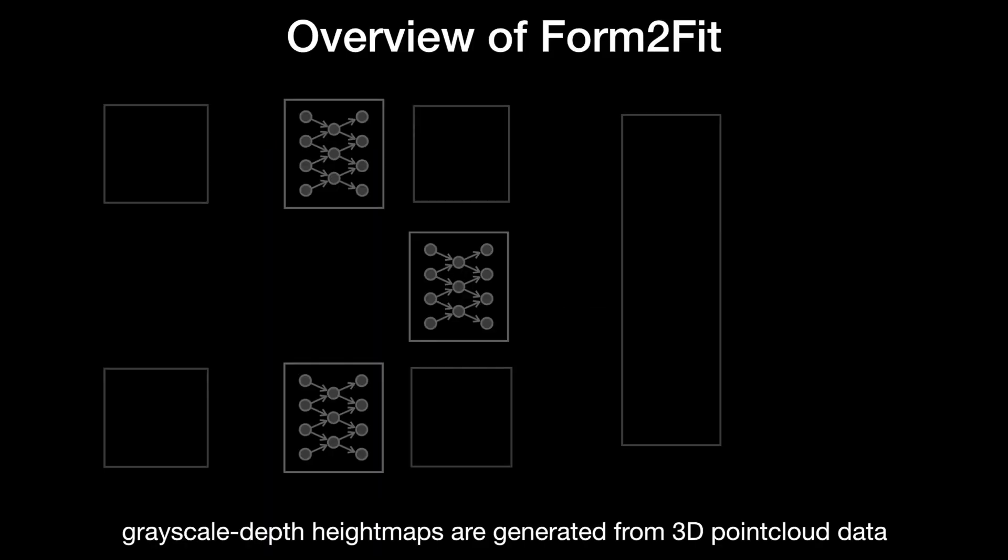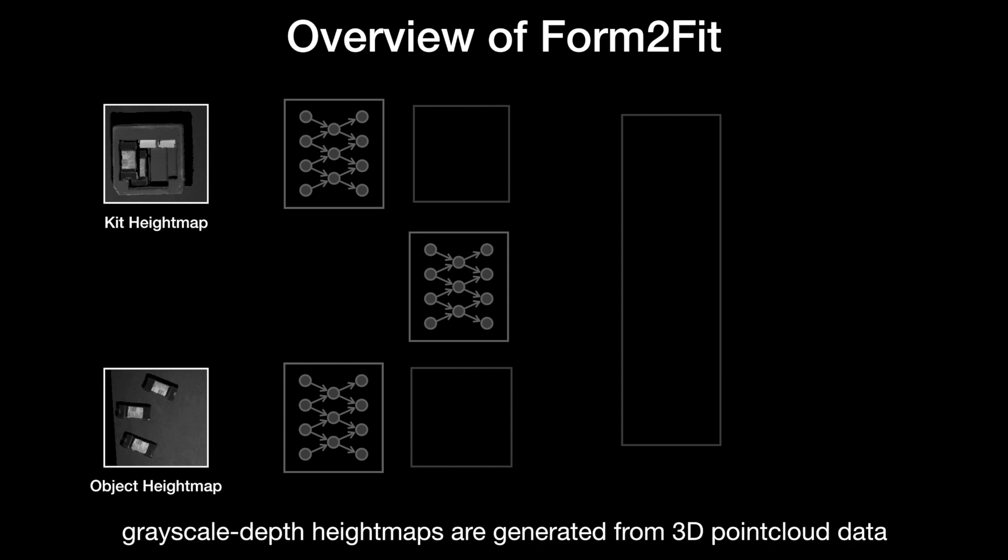Using a calibrated 3D camera, our system captures grayscale depth images of the robot workspace and uses 3D point cloud information to produce two grayscale depth height maps, one for the kit and one for the objects.